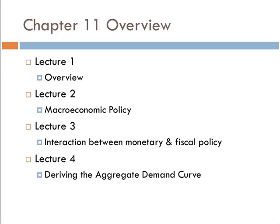And then finally we're going to derive the aggregate demand curve. In lecture 4 we'll come back to that big picture overview and take it one step further, bringing the IS-LM together into the aggregate demand curve along with the aggregate supply curve, giving us a complete model of short run fluctuations of the economy.